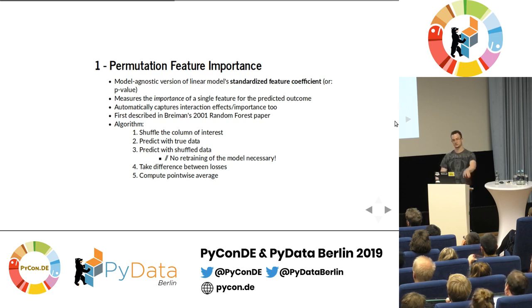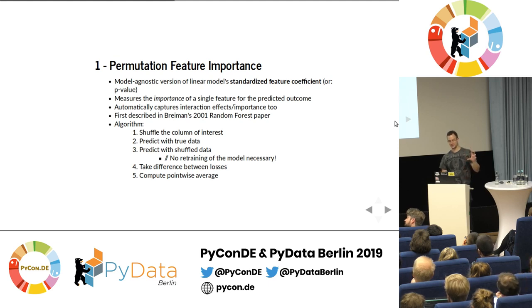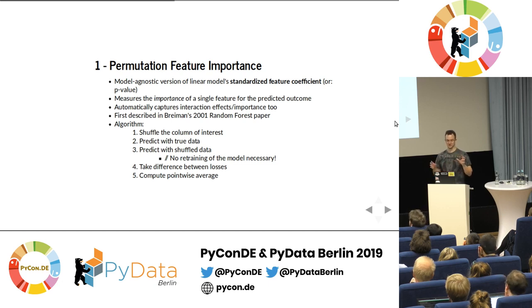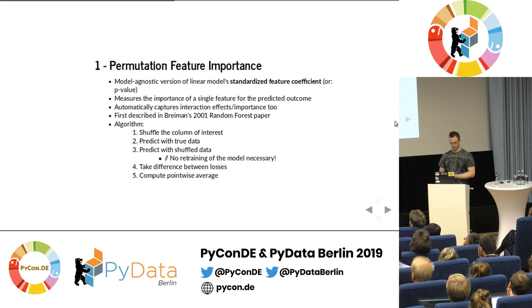You send your original dataset through the model, and then the permuted dataset. If the column was not important — just random data — the two error rates should be the same or similar. If it's a very important column, the two error rates should be different; your manipulated dataset would perform worse. The nice thing is that you don't have to retrain your model — you take it as a given black box.